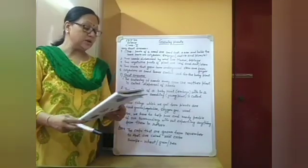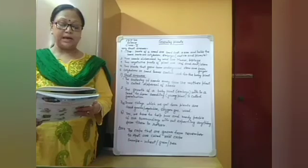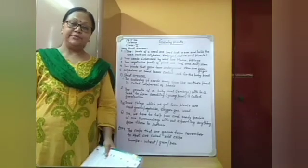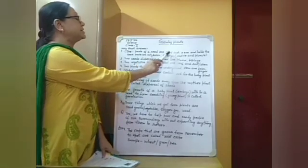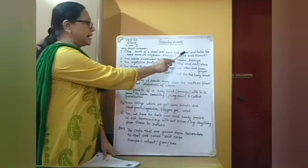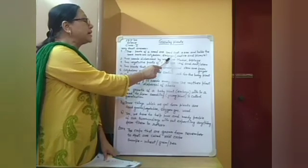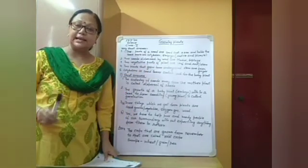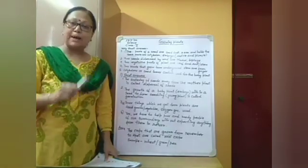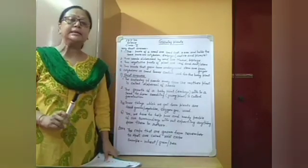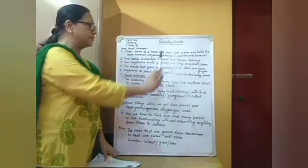Next are the very short answer questions. First: name the parts of a seed. The parts of a seed are the seed coat and scar on the outside. Inside the seed are the cotyledon and embryo. Within the embryo there is a radicle and plumule. You have to write all parts — both the outer part and the inside parts of the seed.